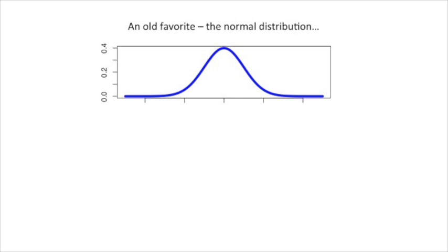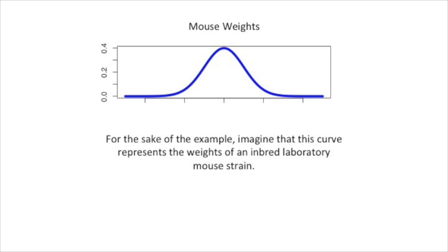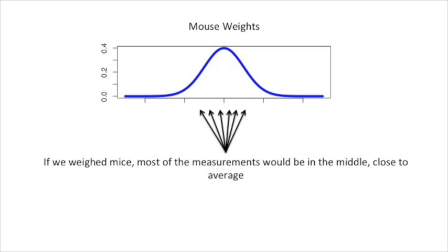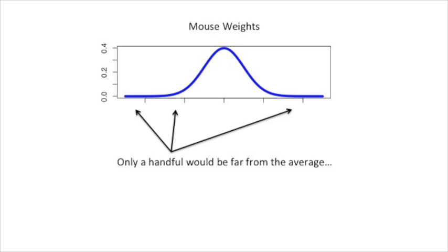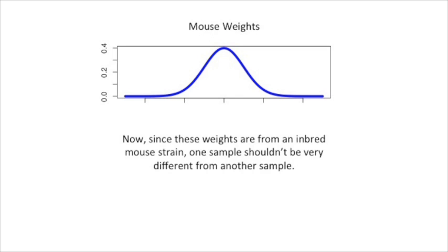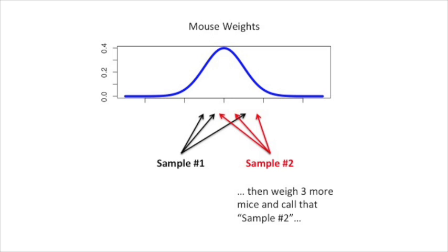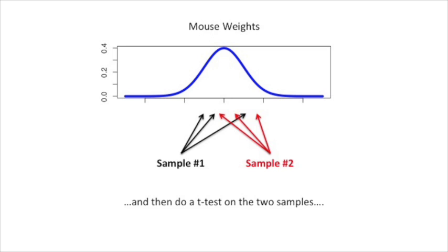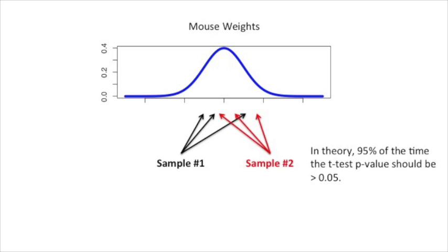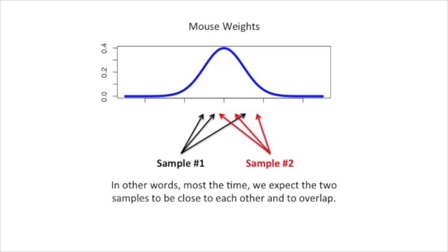Here's an old favorite, the normal distribution. For the sake of the example, imagine that this curve represents the weights of an inbred laboratory mouse strain. If we weighed mice, most of the measurements would be in the middle, close to the average. Only a handful would be far from the average. Since these weights are from an inbred mouse strain, one sample shouldn't be very different from another sample. For example, if we weigh three mice and call that sample one, and then we weigh three more mice and call that sample two, and then do a t-test on the two samples — in theory, 95% of the time the t-test p-value should be greater than 0.05.